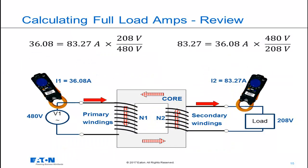So this is just a different way of looking at the exact same calculation we just made. If I'm drawing full load amps on the secondary and place a meter in that location, the meter would read 83.27 amps. If I placed a meter on the primary at the same time, the current on the primary would read 36.08 amps, thanks to the turns ratio of the transformer.